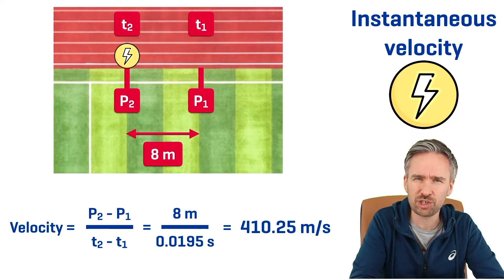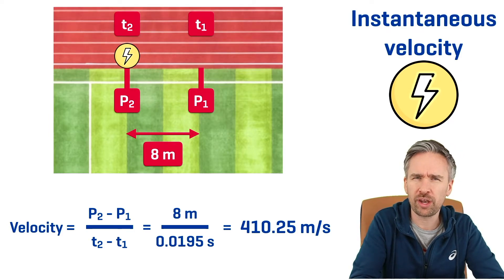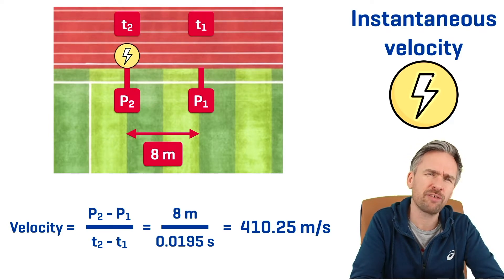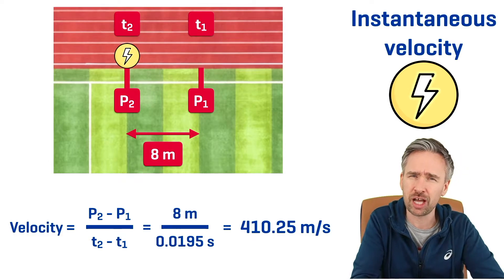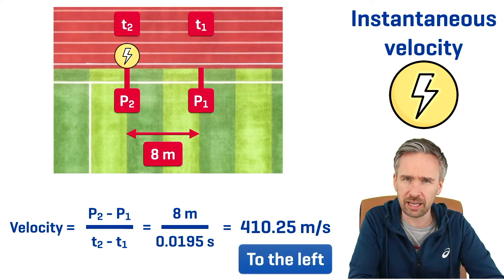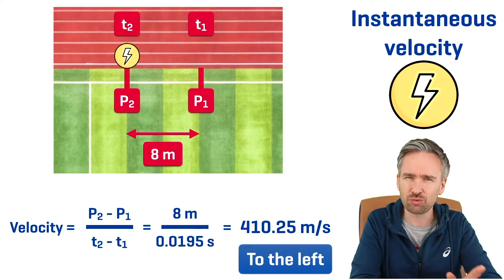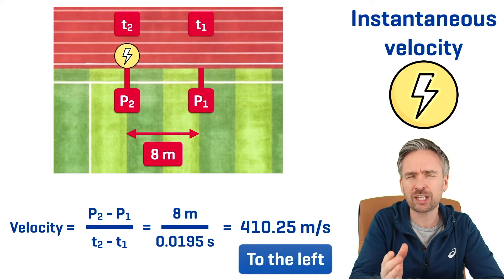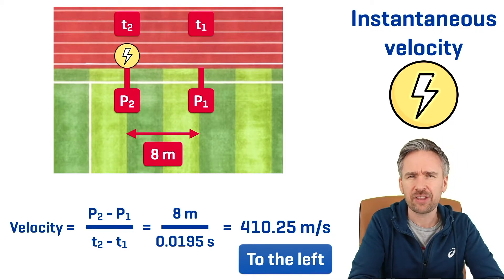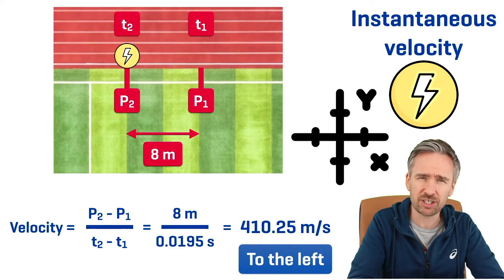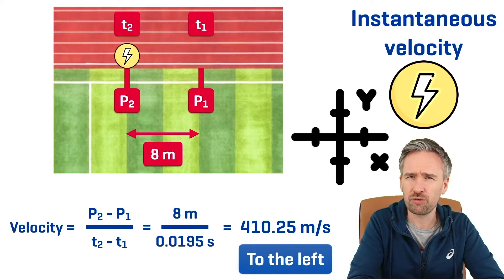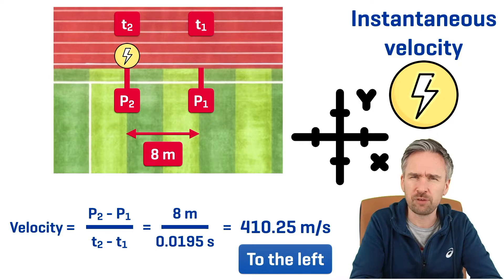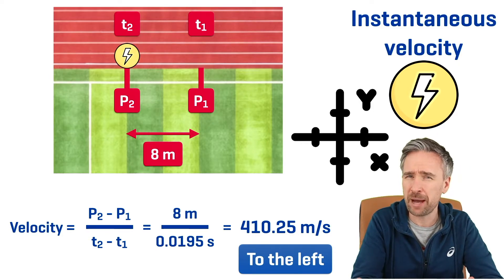In this case the displacement was 8 meters, and the time between P1 and P2 was 0.0195 seconds. Putting that together, the Flash's velocity is 410.25 meters per second to the left. It's really important to stipulate the direction. If this were on an XY coordinate system, you would say the Flash's velocity is minus 410.25 meters per second, because the minus sign gives you the direction in mathematical notation.